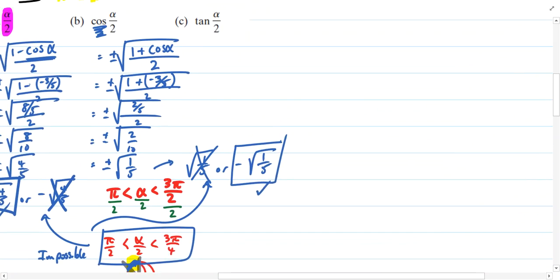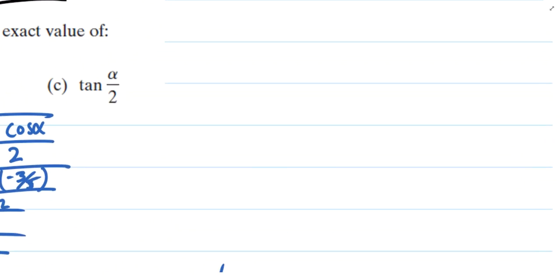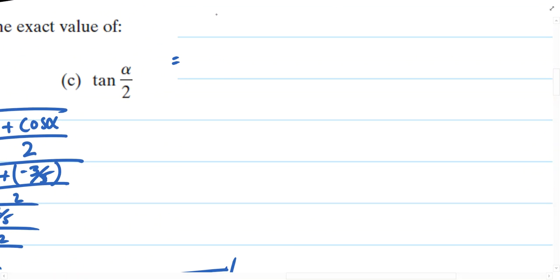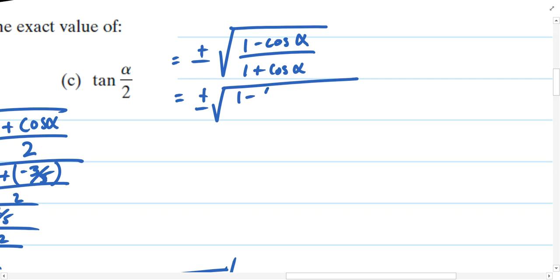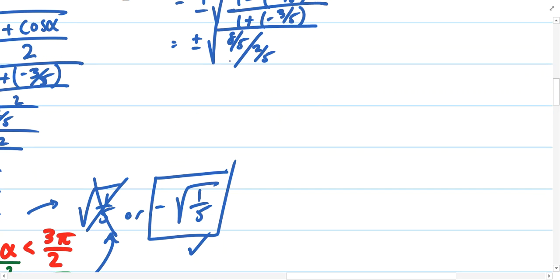Let's talk about the half-angle identity for tangent. That half-angle identity is positive or negative square root of 1 minus cosine alpha over 1 plus cosine alpha. That would be 1 minus negative 3 fifths and 1 plus negative 3 fifths, which would simplify to positive and negative 8 fifths over 2 fifths. The 5s will cancel, and now we're looking at square root of 8 divided by 2, which is 4, or positive or negative 2.